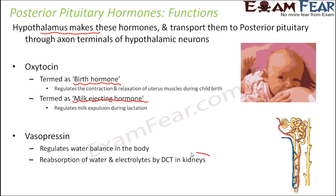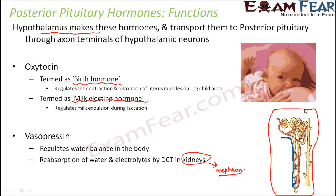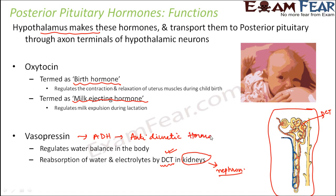We discussed the excretory system in detail when we spoke about kidneys. Inside the kidney, the functional units are nephrons. There was a part where reabsorption of water and electrolytes took place, known as the DCT or distal convoluted tubule — that heavily coiled yellow-colored structure. A lot of water reabsorption takes place there, and this water reabsorption in the distal convoluted tubule happens due to the presence of vasopressin, also known as ADH or anti-diuretic hormone.